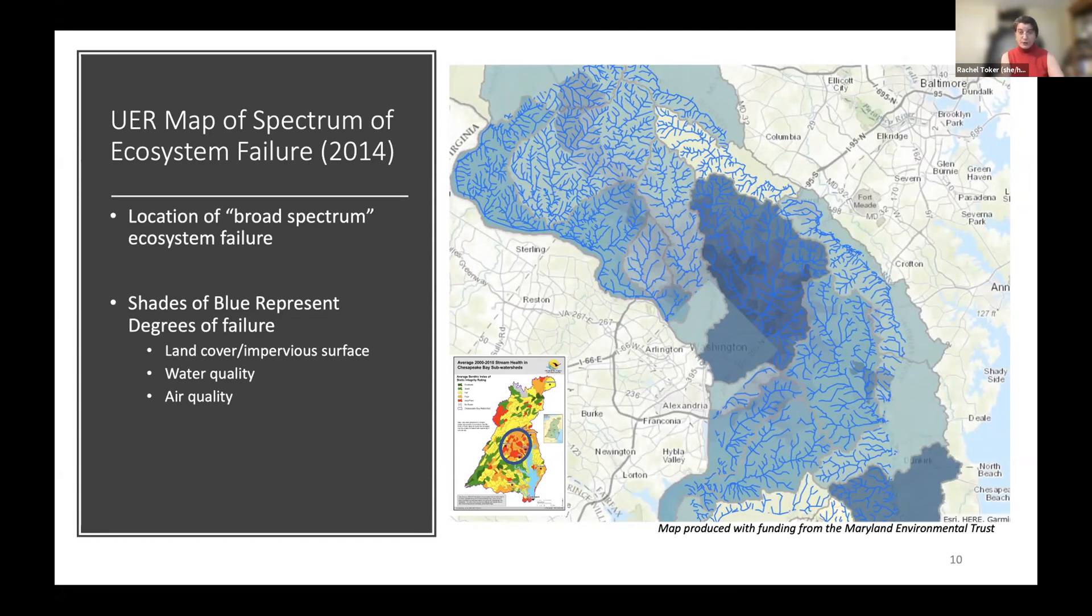These are essential for urban societies to operate on a daily basis. We rely on numerous other ecosystem services, but the regulating services are need-to-haves that, when people try to perform them without nature's help, are costly and require intensive inputs of energy and resources if we can perform them at all. I'll mention human health here as an ecosystem service as well, even though it's not considered a regulating service, but it's increasingly discussed as an ecosystem service and is arguably fairly important.